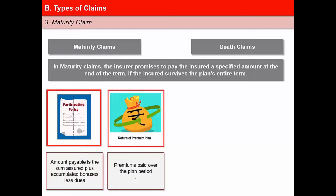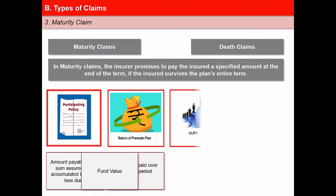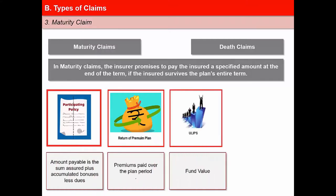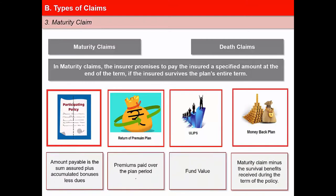Under a return of premium plan, premiums paid over the term period are returned when the policy matures. Under a Unit-Linked Insurance Plan (ULIP), the insurer pays the fund value as the maturity claim. Under a money-back plan, the insurer pays the maturity claim minus the survival benefits received during the term of the policy. The insurance contract terminates after the claim is paid.